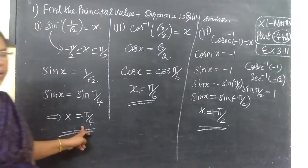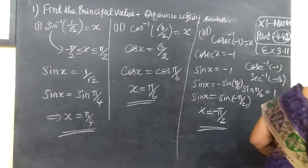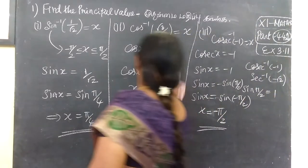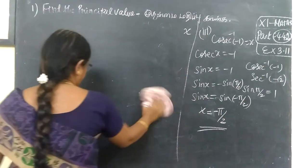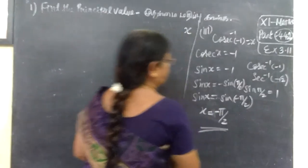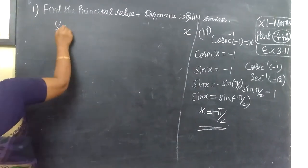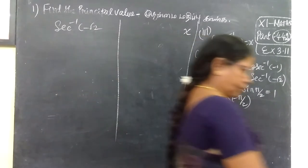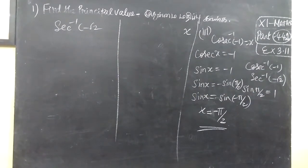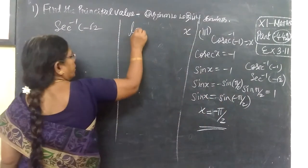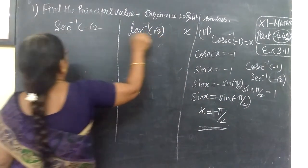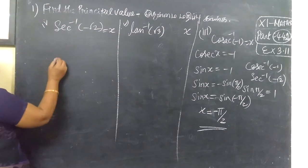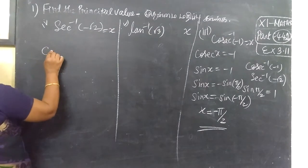π/6 is then π/4, minus 1 is clear, answer correct. The third one is secant inverse minus root. Secant inverse minus root, written as type 12, and then the third one is lower than theta, which means the third one is equal to the principal value.